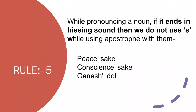Rule number 5: When we pronounce a noun, if there is a hissing sound — like in words such as 'Ganesh', 'peace' — we will put only an apostrophe and not apostrophe S. You have to check the pronunciation to see if there is a hissing sound or not.